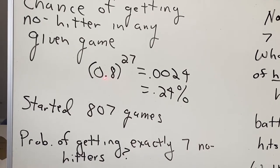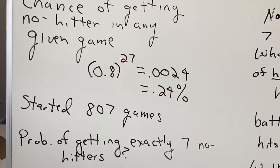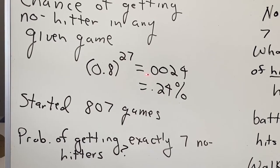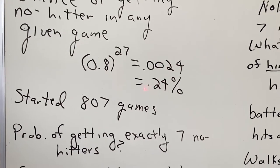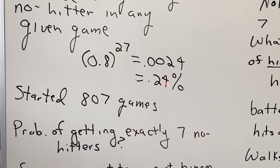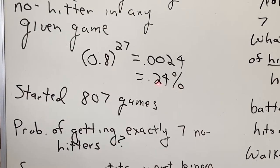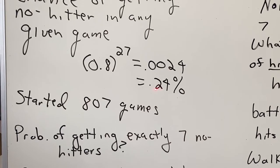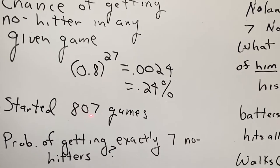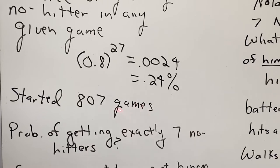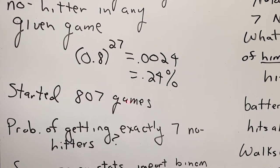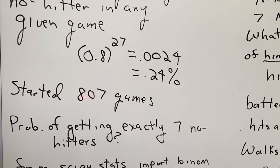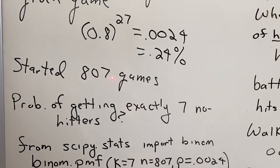27 straight batters getting an out would be 0.8 to the 27 power. That's about equal to 0.024, which is 0.24%. That's a little less than 1 in 400. He started 807 games, so if he should get a no-hitter once every 400 times or so, we would expect him to get about 2 no-hitters.